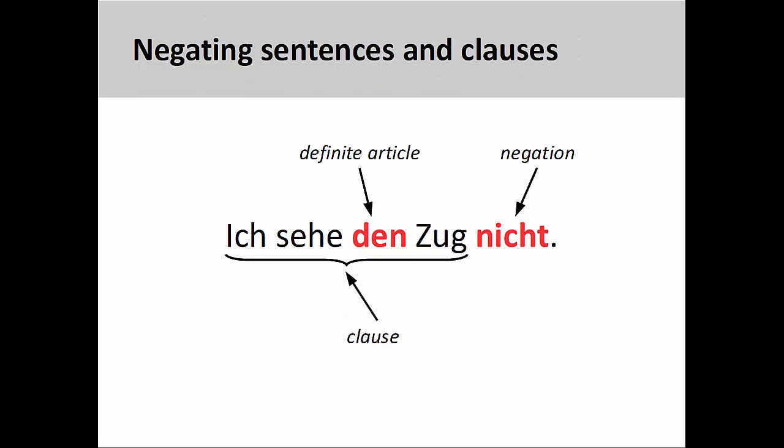Note, however, that we can only negate indefinite nouns in this manner, meaning nouns that are preceded by an indefinite article. Nouns that are preceded by a definite article require the use of nicht at the end of the clause: ich sehe den Zug nicht — I do not see the train.